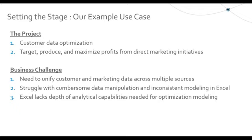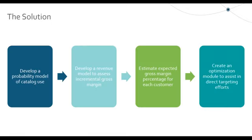The business needed a quicker, more efficient way to prep, blend, and analyze customer data. They broke the problem into four distinct parts: first, develop a probability model of catalog use; second, develop a revenue model to assess incremental gross margin from positive catalog use; third, estimate expected gross margin percentage per customer; and fourth, create an optimization module to assist direct marketing managers in selecting the proper mailing list and catalog items for targeting.